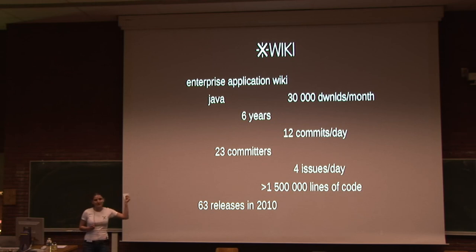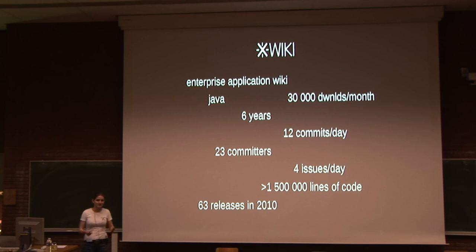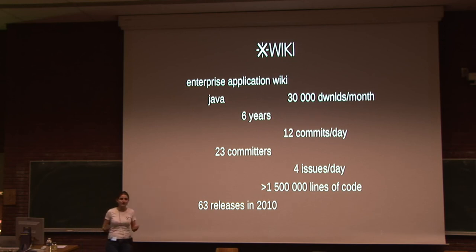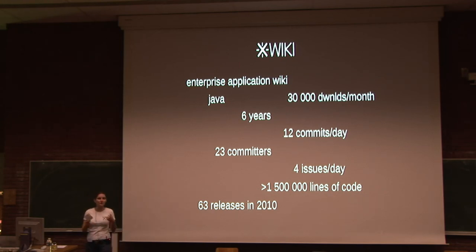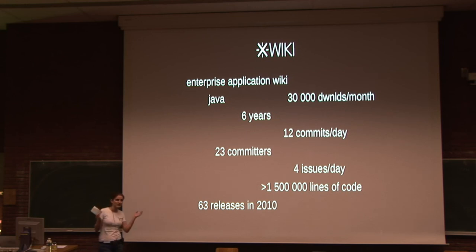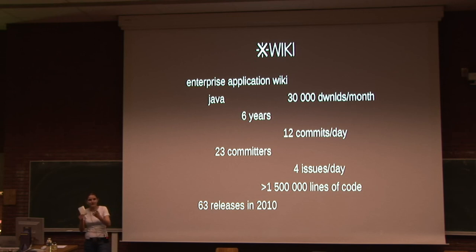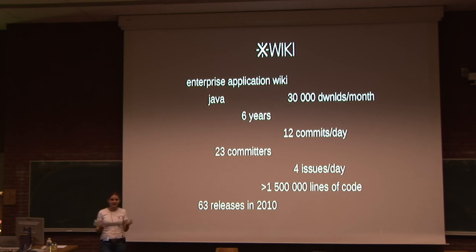What's an enterprise application wiki? First it means that it's a wiki, it has documents, it has enterprise-level collaboration features around those documents. And besides that, it has extensibility features to allow users to create situational applications — normal users can go into the web interface, define data types, fill in data for those types, store it in the wiki, and write a little scripting to use that data to create little applications.